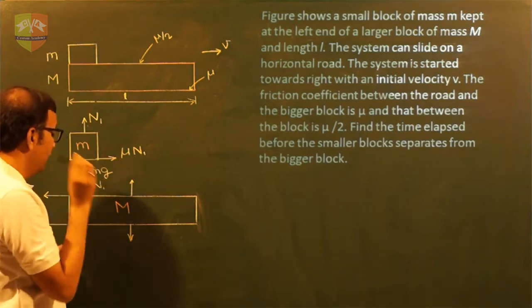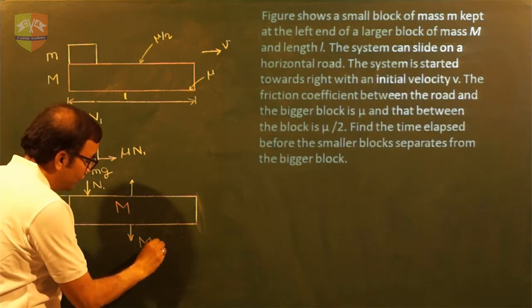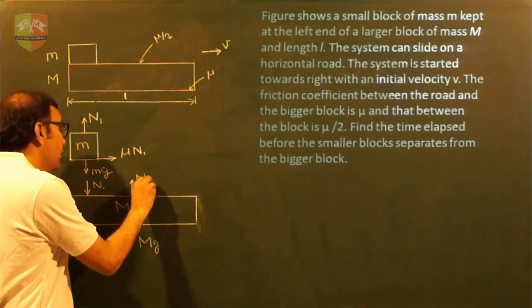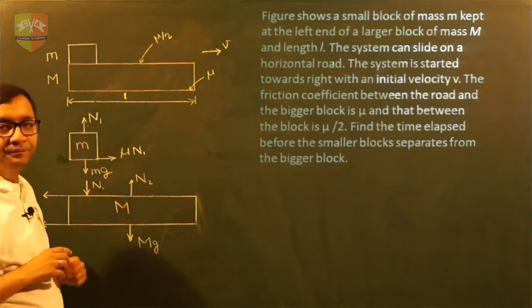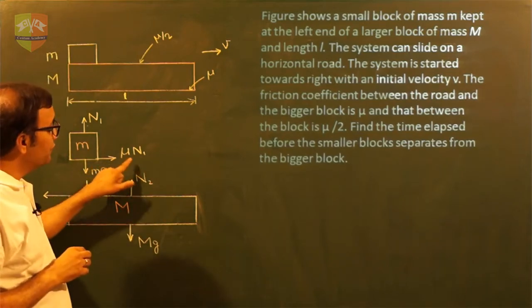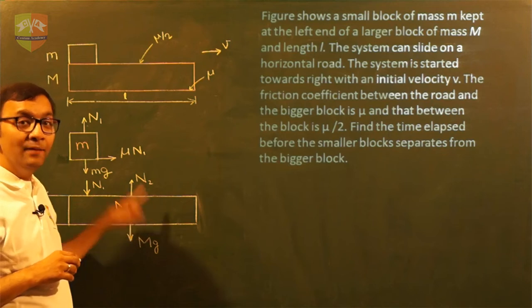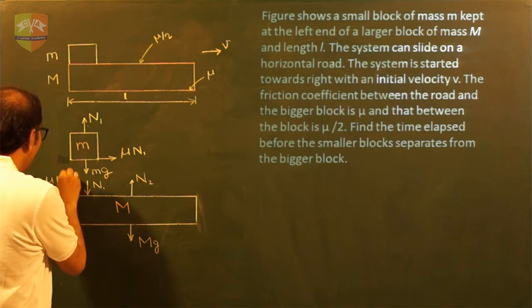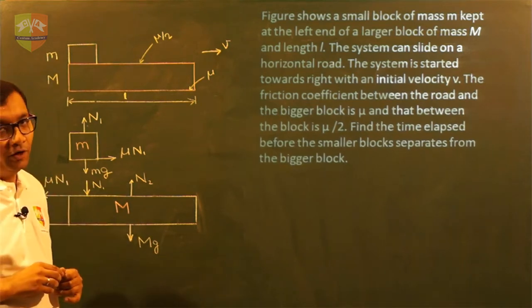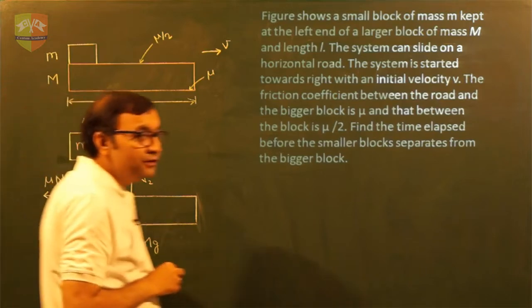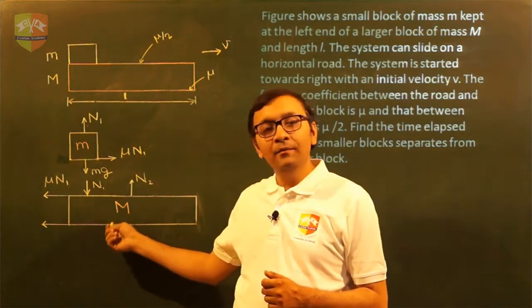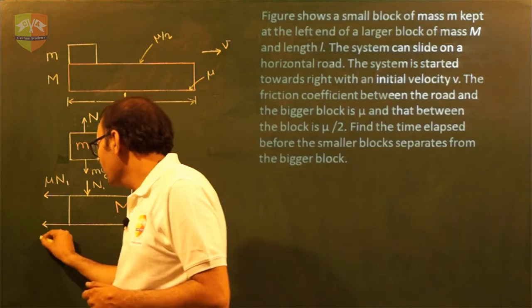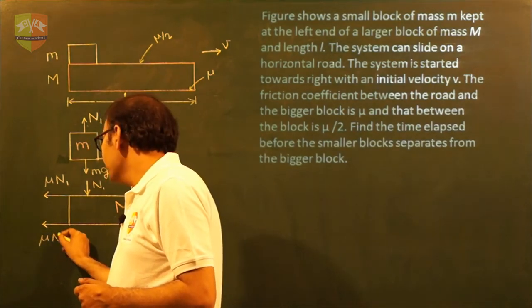So this will be a pair of N1, so this is N1 force. There will be mg force downward on the bigger mass and there will be normal reaction from the ground on capital M. Now this friction force is applied by capital M on small m, so there must be a pair of this friction force on the left hand side. Let us call this mu times N1. Now there will be another friction between capital M and the ground. That friction force value will be mu times N2.